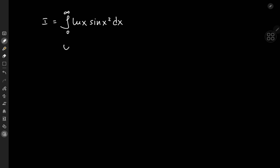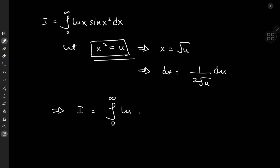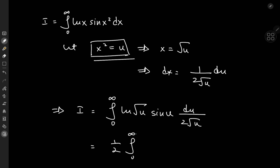Now I'd like to make a substitution by letting x² = u, which implies that x = √u, which implies that dx = (1/(2√u)) du. So this implies that I is now an integral still from zero to infinity — because our limits are clearly not bothered — of log(√u) times sine(u), and the new differential element is du divided by 2√u.